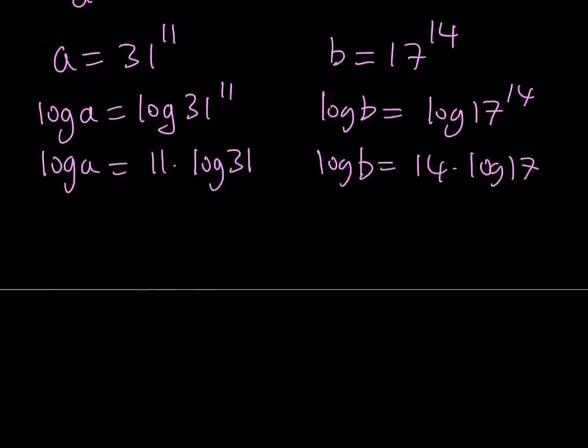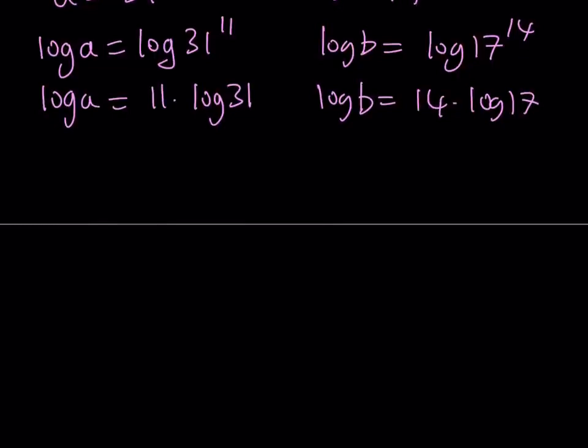You can write this as log B equals 14 times log 17. So if I can find the values of log 31 and log 17, and then multiply by 11 and 14 respectively, then I'll be getting the values of log A and log B. And then I can compare those two values. When I compare those two values, what happens? So, in terms of log function, this is going to mean something.